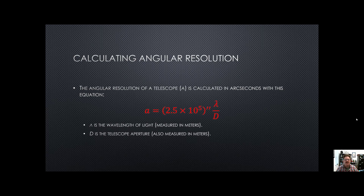The angular resolution of a telescope is based on an equation. I won't ask you to calculate anything — this is about understanding relationships. A is the angular resolution; you want A to be as small as possible. If there's an angular separation larger than A, your telescope can see it as two distinct objects. The two key dependencies are wavelength of light and the size of the telescope. Angular resolution is inversely related to telescope size — the larger the telescope, the smaller A, and the finer the detail you can see.